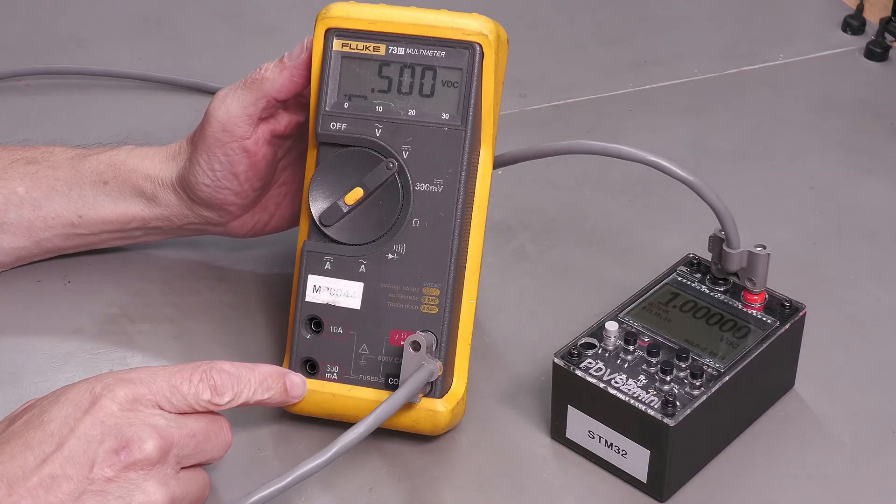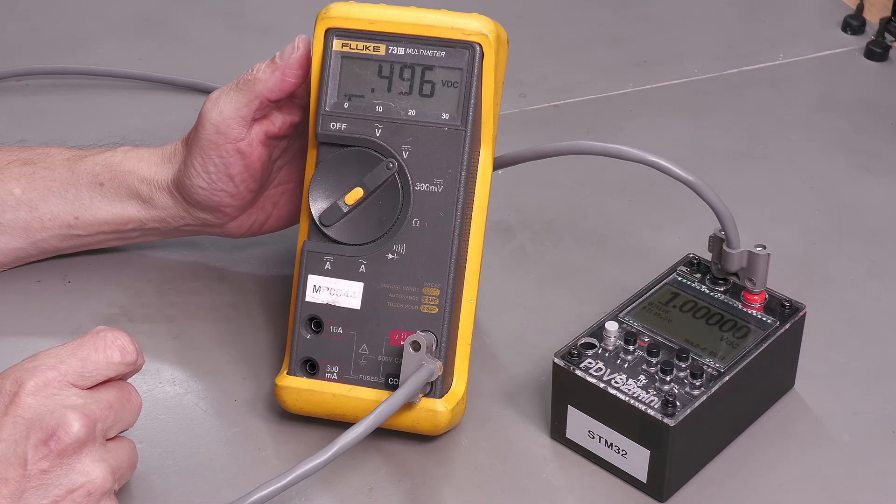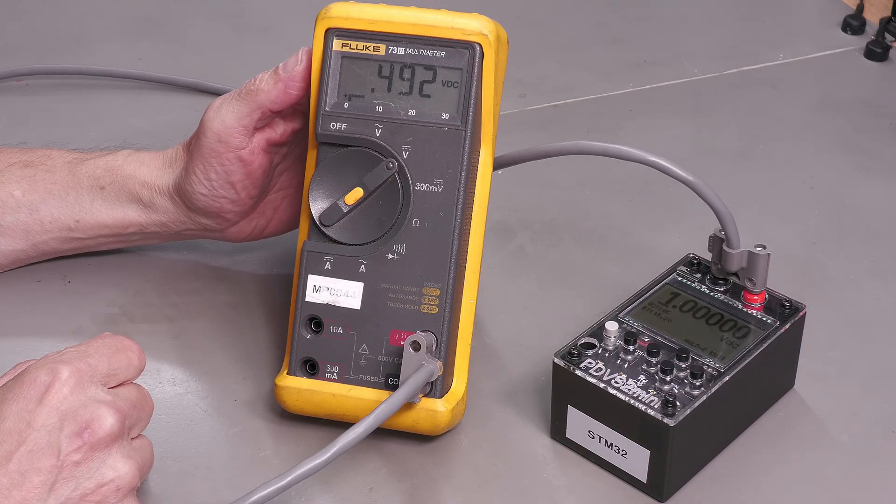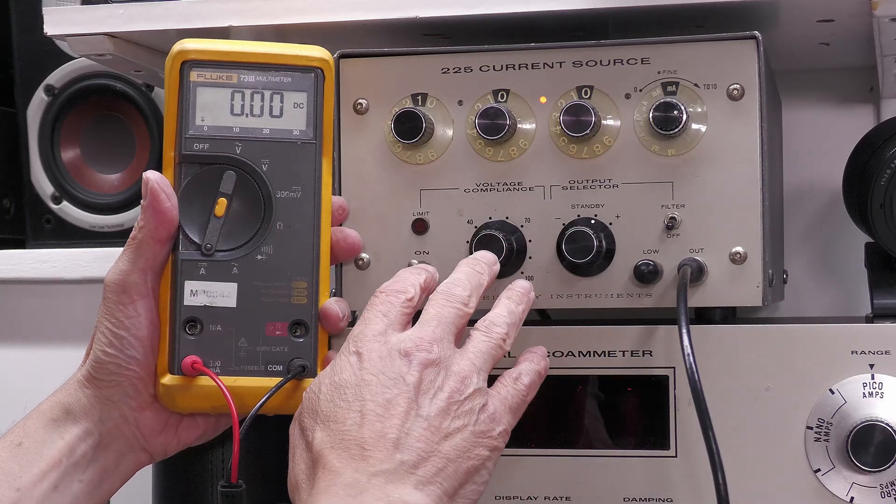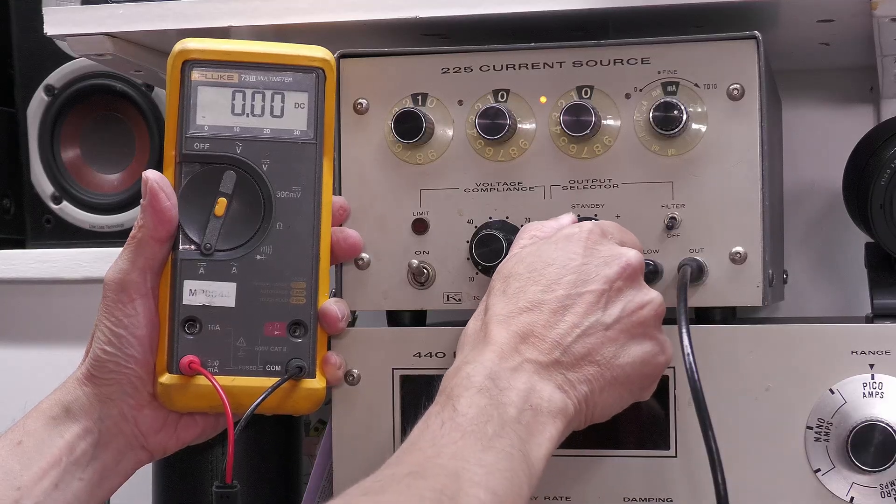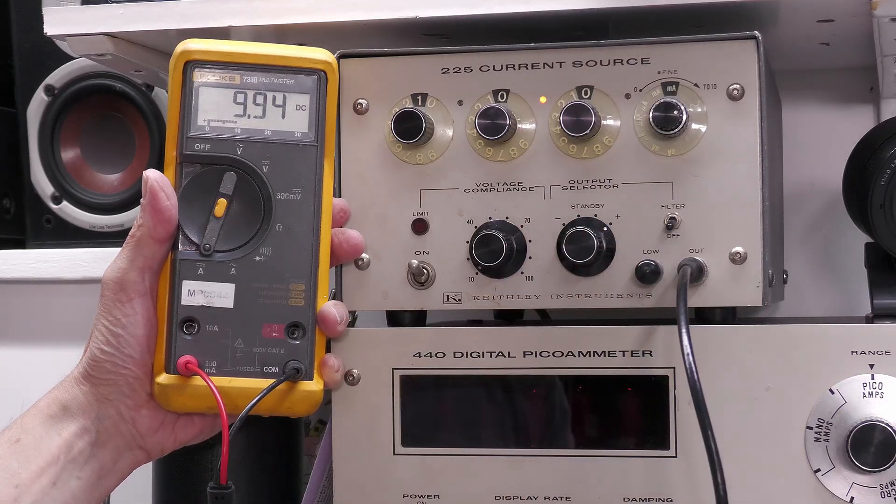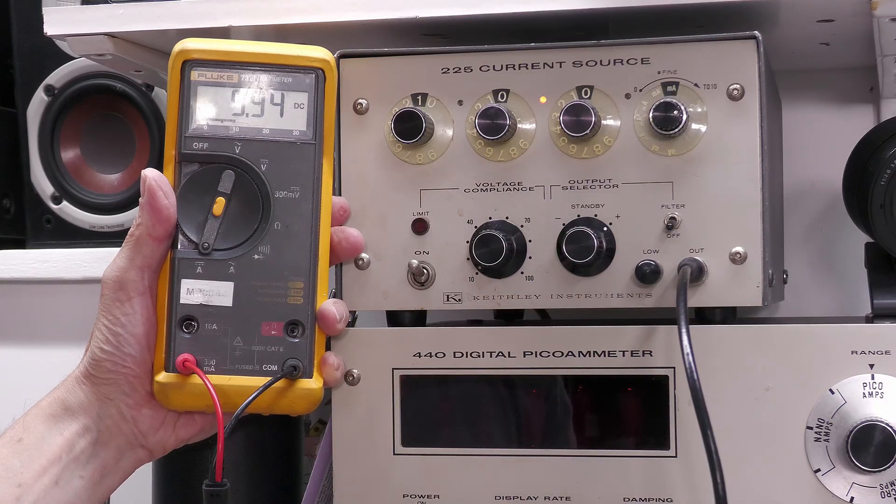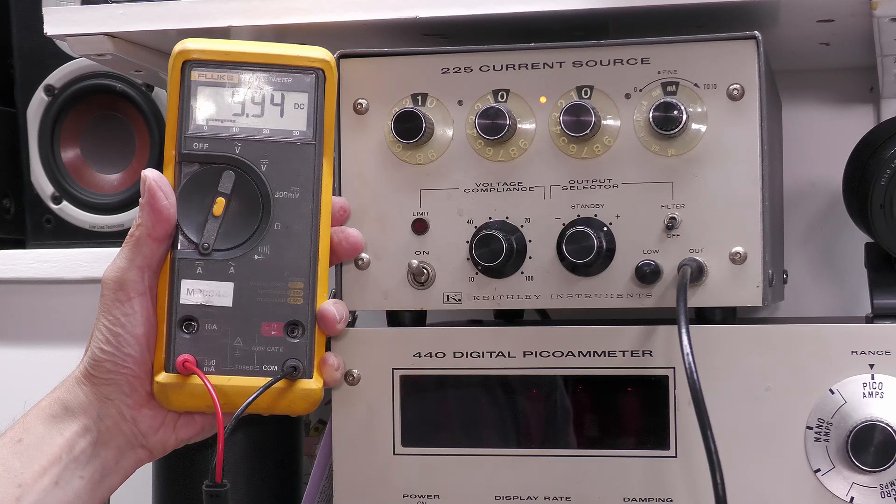How about the current inputs? Let's stick it on my current source and see what it does. Okay I've got hooked up the current source. I've set 10 milliamps output so let's just put it on see what we get. That's not too bad - 9.94.